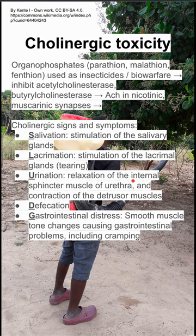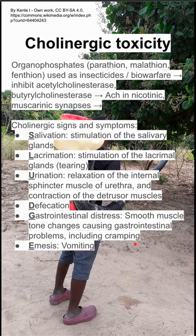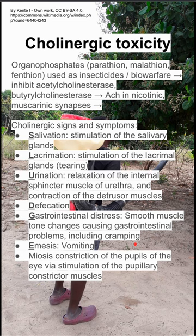U is for urination, which is relaxation of the internal sphincter muscle of the urethra and contraction of the detrusor muscles. D is for defecation or pooping yourself. G is for gastrointestinal — smooth muscle tone changes causing GI upset like cramping. You'll also have E for emesis or vomiting, and miosis, which is constriction of the pupils of the eye via stimulation of the pupillary constrictor muscles.